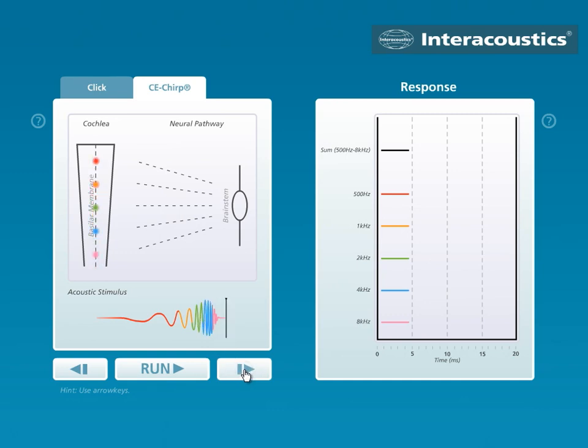And, of course, the TRICK is to have the CHIRP in such a way that all these different frequency components arrive at their specific point on the basilar membrane at the same time and excites the basilar membrane at the exact same time. CHIRP travels up through the neural pathway synchronized and arrives at the brainstem synchronized.